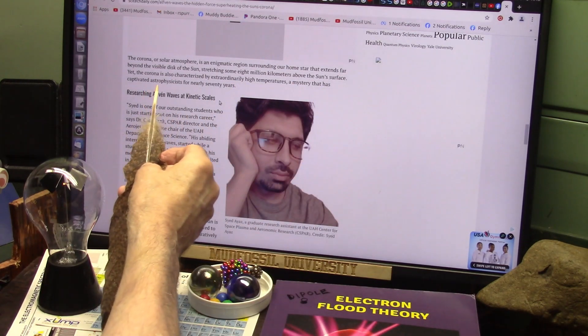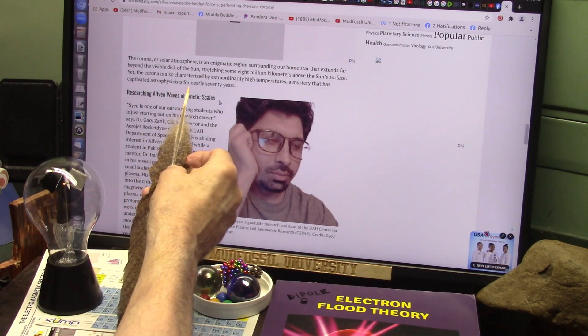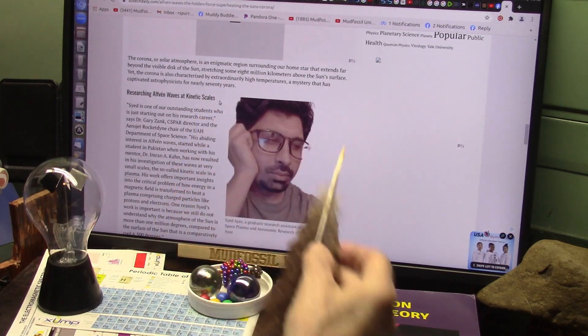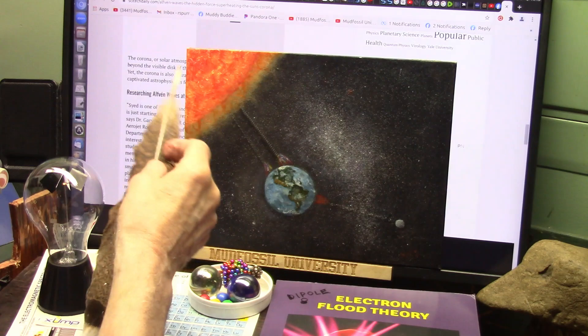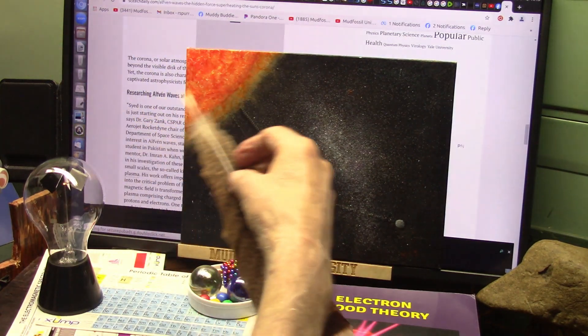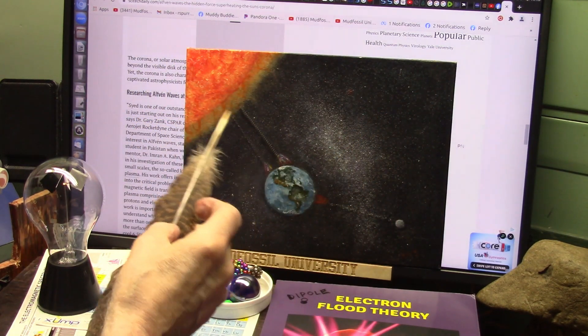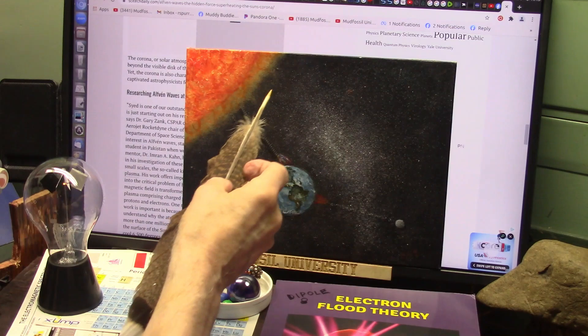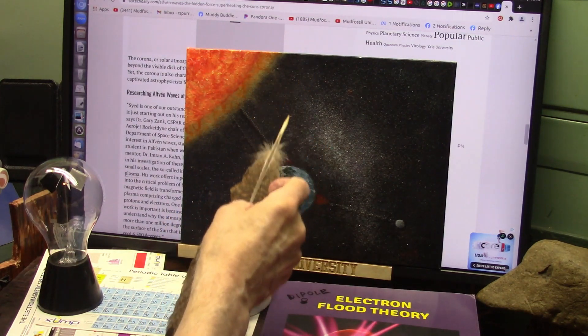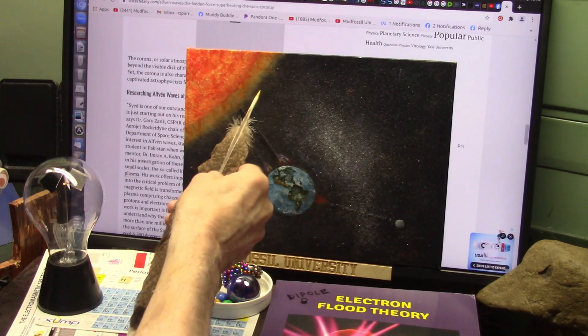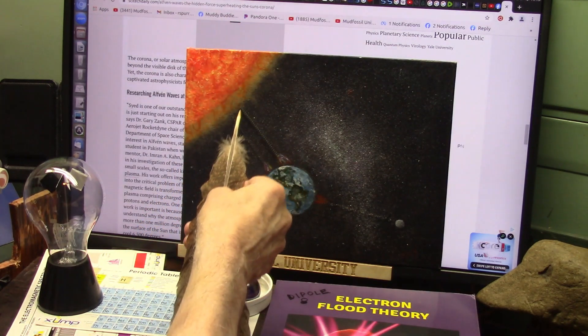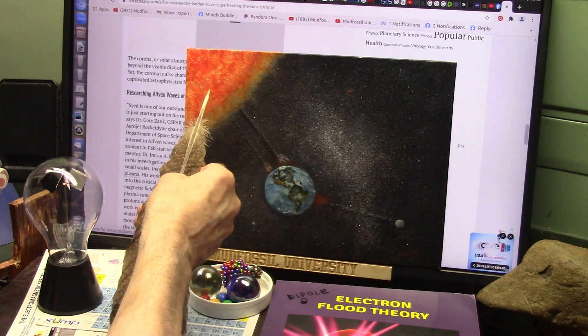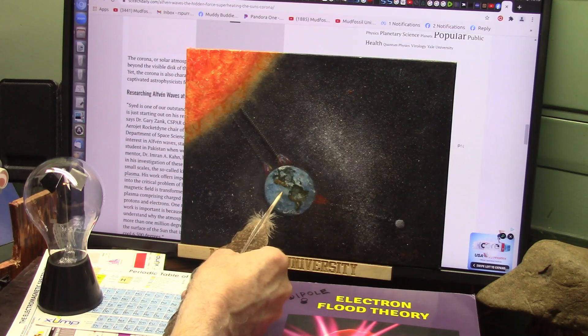Yet the corona is also characterized by extraordinarily high temperatures, a mystery that has captivated astrophysicists for nearly 70 years. And it is as simple as this: the Sun is scrubbing and spinning and being ripped through the solar system and through the galaxy. As it does, it interacts with all these particles that are in front of them, pushing them out of the way, which creates this zone of interaction, which is the corona, which is millions of degrees. And it's ten thousand here.